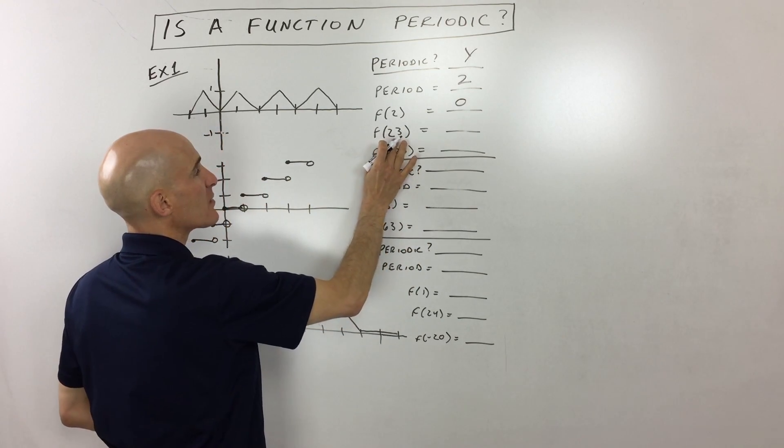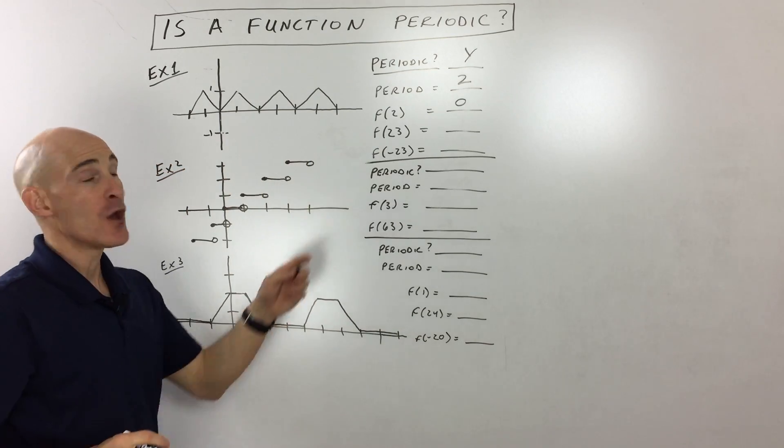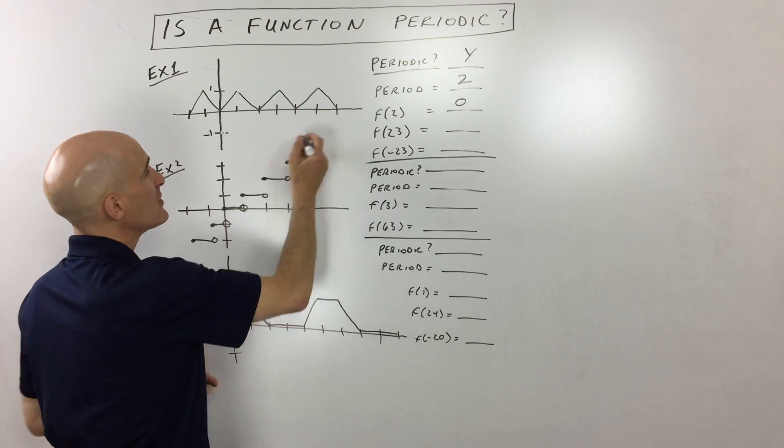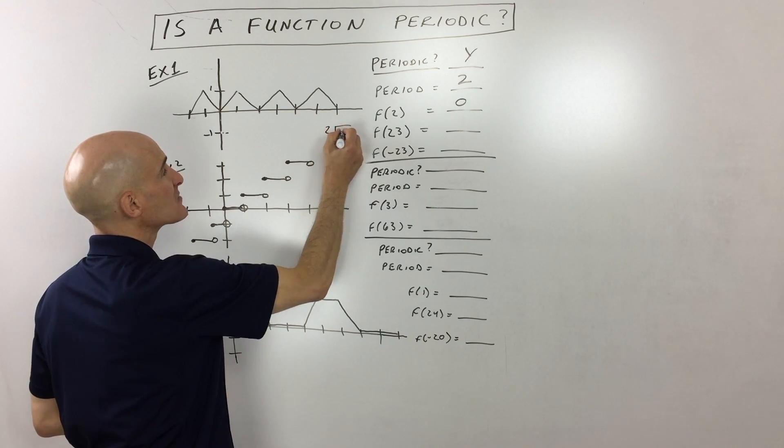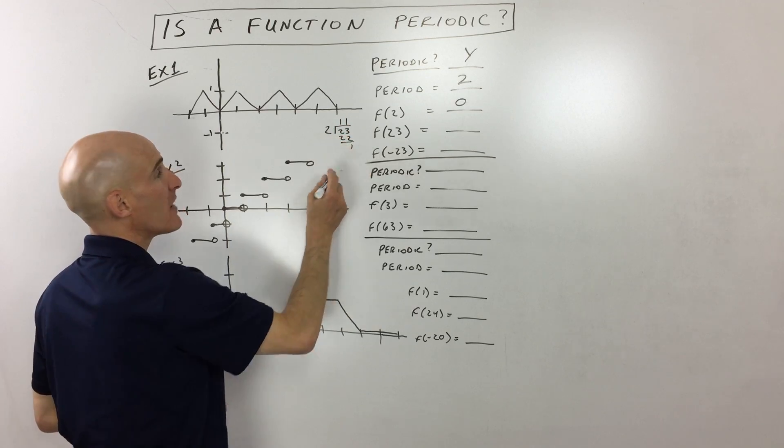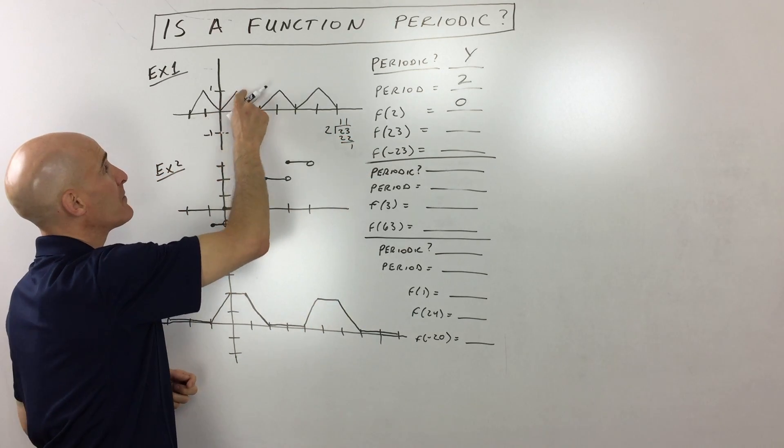When x is 23, what's the output? Well, we don't want to necessarily draw this graph all the way out to 23. But if we realize that it repeats every two, let's see how many times does two go into 23. Well, it's 11 times remainder one.